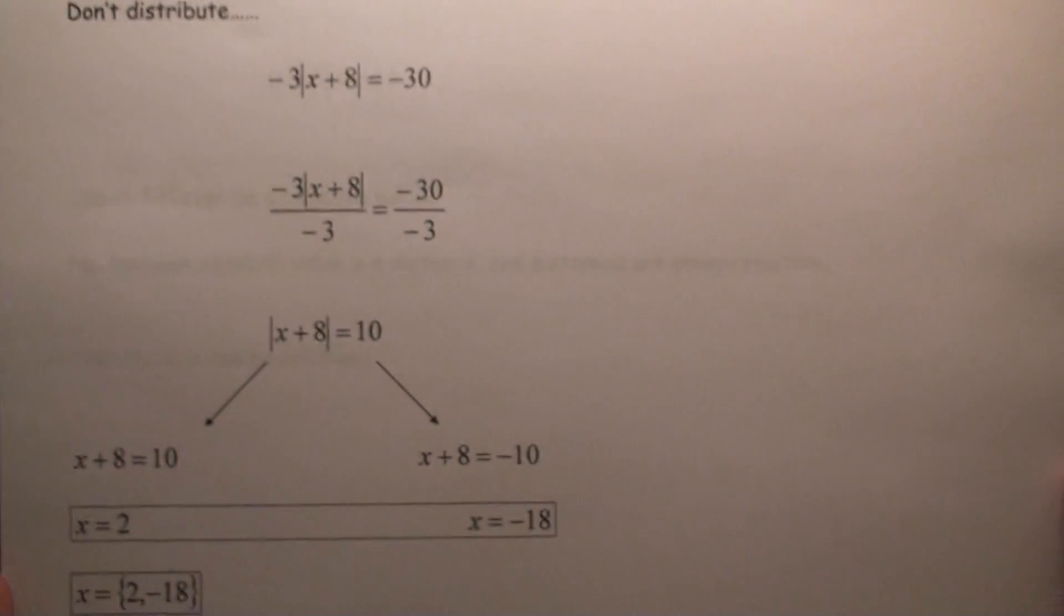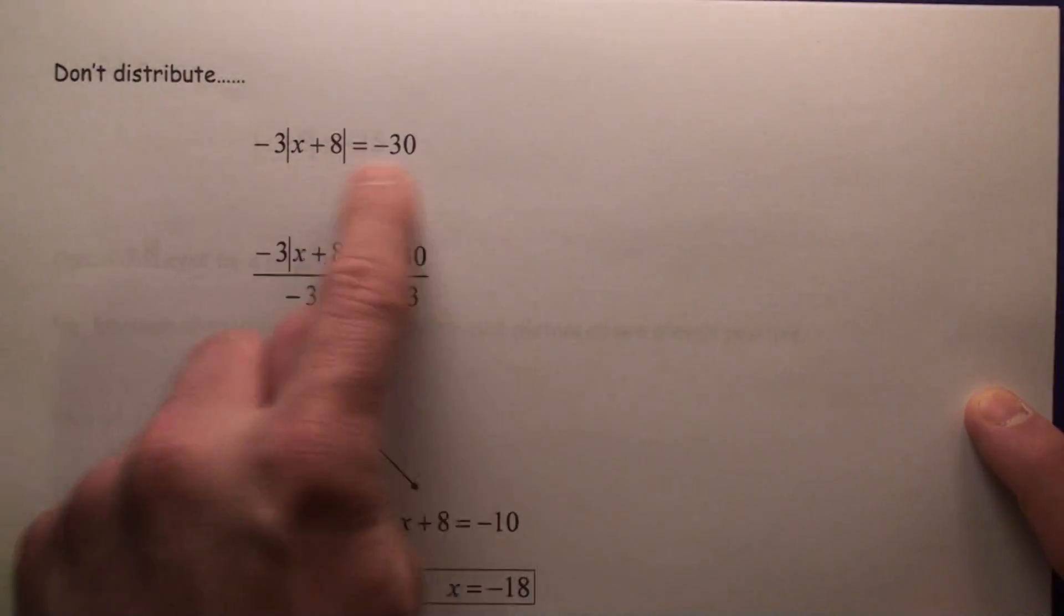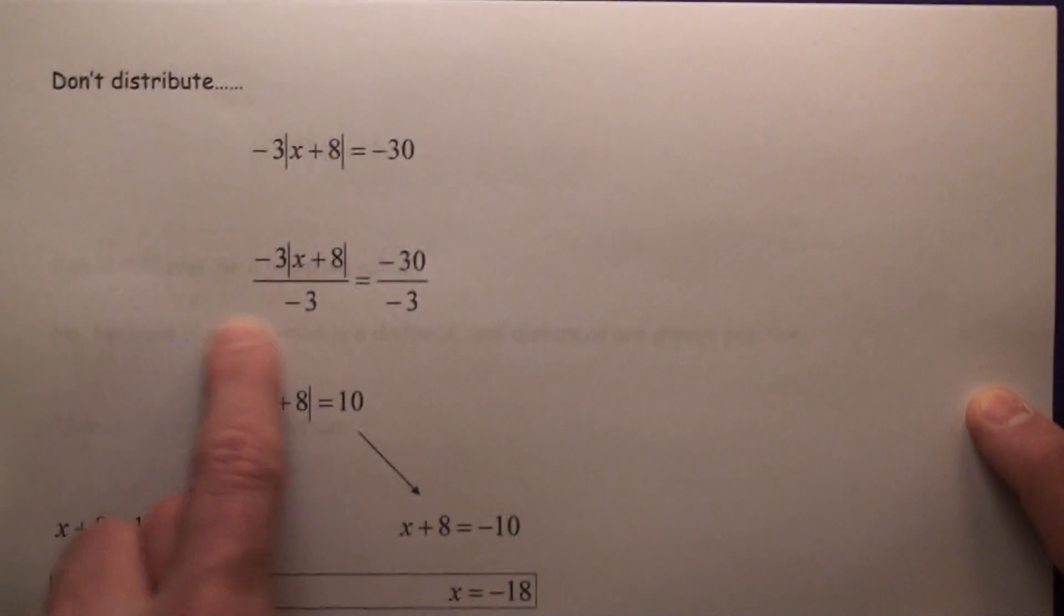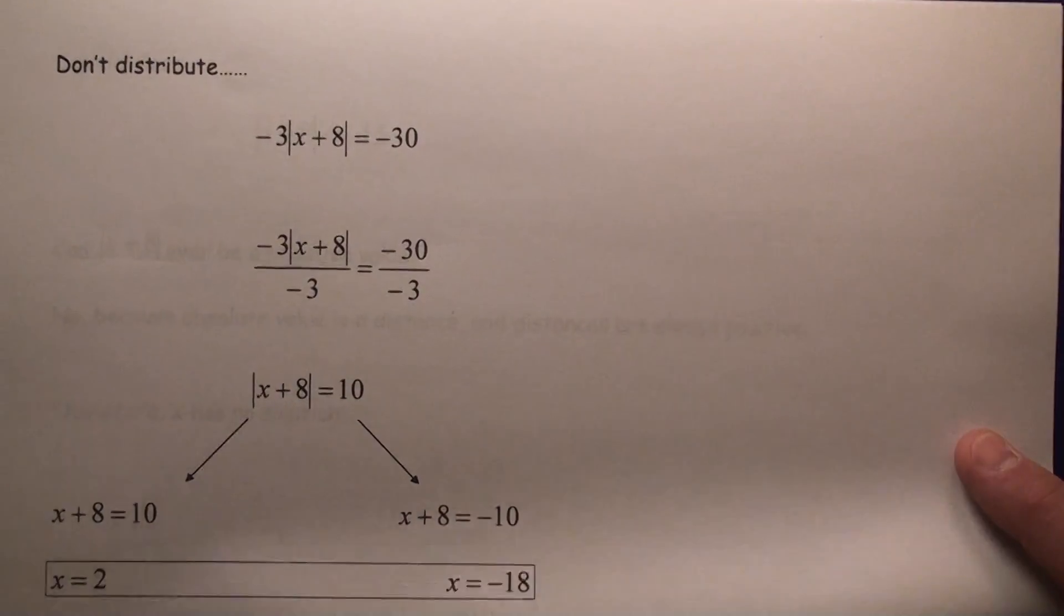Okay, here's one. Do not distribute, please. You're not going to distribute. You're going to divide both sides by negative 3. That gets rid of the negative 3. You have x plus 8 equals plus or minus 10, and you solve both of those: x equals 2 or x equals negative 18.